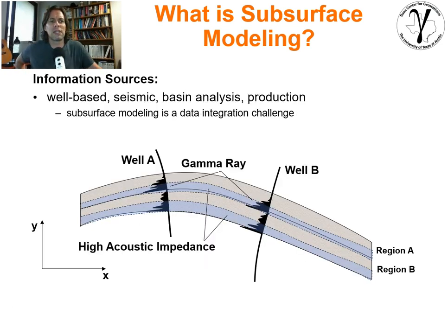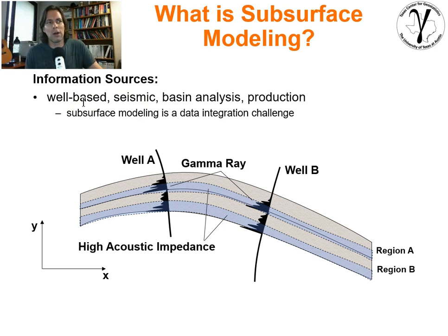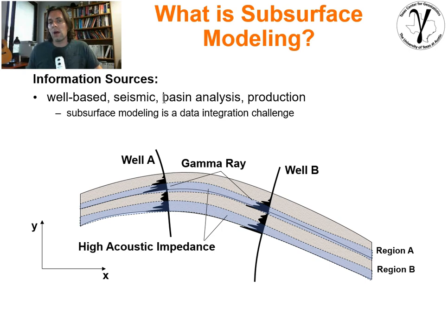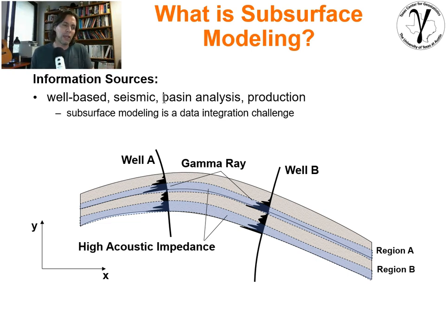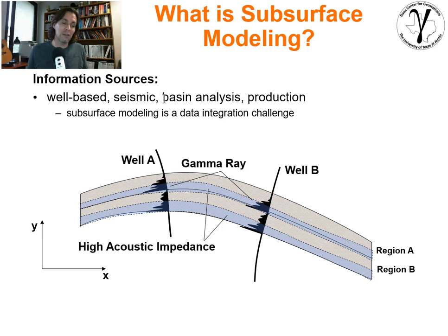The information sources available to us will include well-based measures — direct measures like core, and indirect measures like well logs — plus seismic information. We also have many other sources: the entire effort around large-scale basin analysis, where we've tried to understand the full history, provenance, and allogenic and autogenic forcing on the system. There's a lot we can do to understand the large-scale paleo environment. Then of course we have production data, which is really our one ground truth. We're trying to model extraction of fluids from the subsurface, and production data is ground truth for how the subsurface responds. It could also be mineral grades or flow rates from water wells.